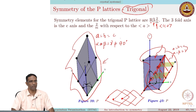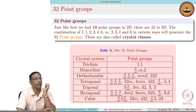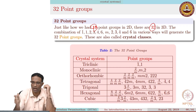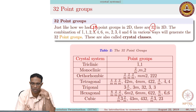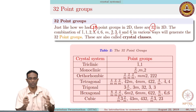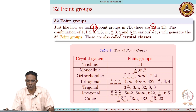Just like how in the case of plane groups you have about 10 point groups, in 3D you have a total of 32 point groups. Basically, the combination of 1-bar, 1, 2, 3, 4, 6, mirror, 2-bar, 3-bar, 4-bar, and 6-bar in various ways is capable of generating these 32 different point groups.